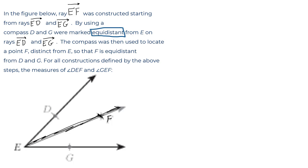From rays ED and EG. Now ED is this one over here on the left and EG is this one over here on the right. What are we told? I'll switch colors here.